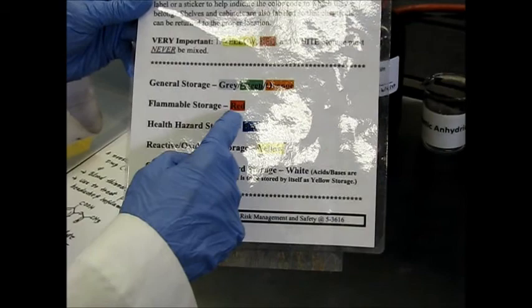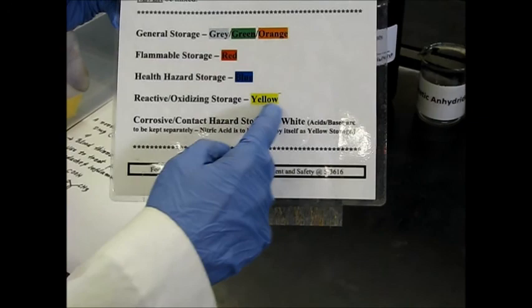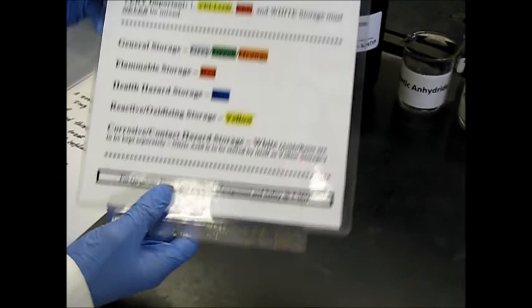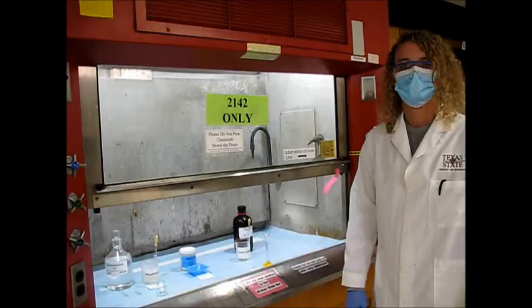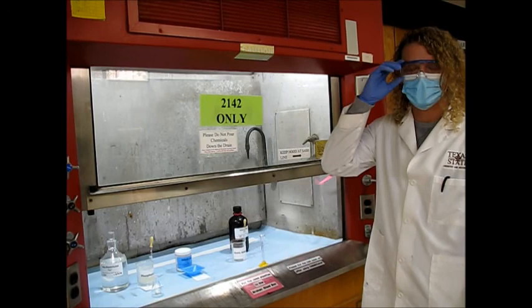Flammable is red. Health hazard storage is blue. Reactive oxidizer storage is yellow. And then white is corrosive and contact hazard storage. So these are very corrosive acids. So handle very carefully. And now let's start our reaction.